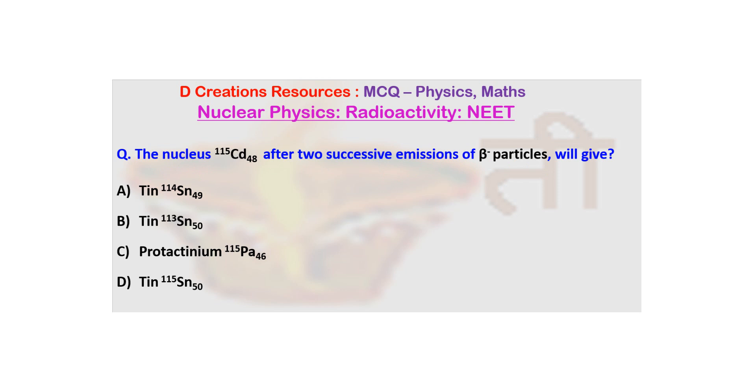B is again tin 113, Sn 50. C is protactinium 115, Pa 46, and option D is tin 115, Sn 50.